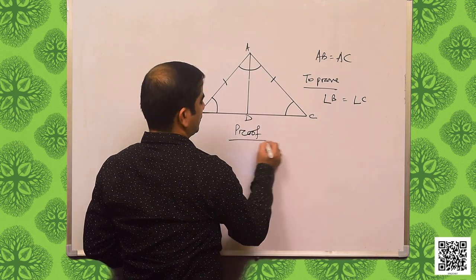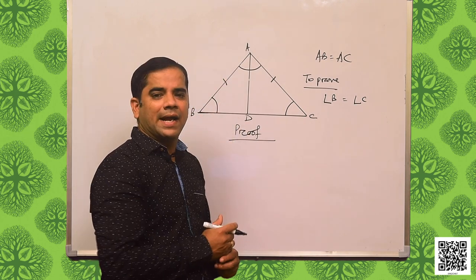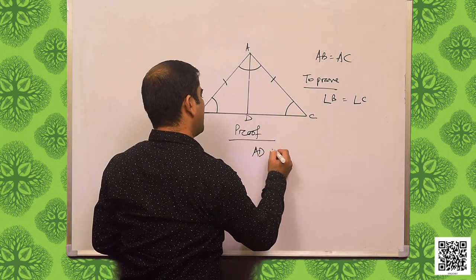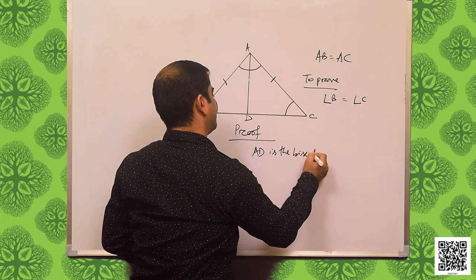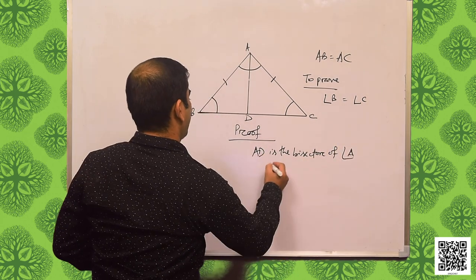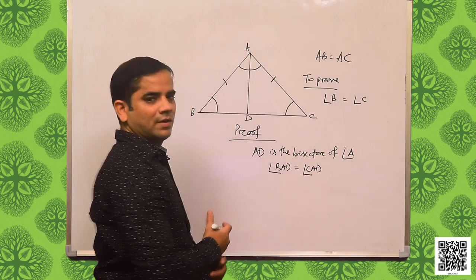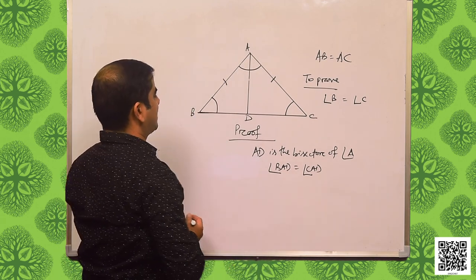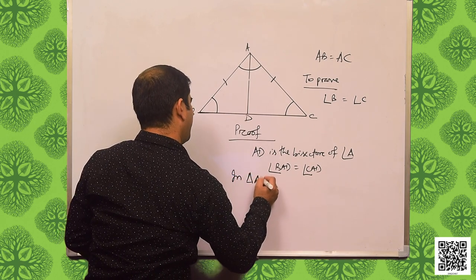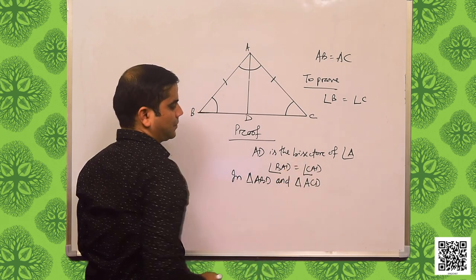Let us prove it. Let us construct a bisector of angle A that intersects BC at point D. AD is the bisector of angle A. What does it mean? It means angle BAD is equal to angle CAD. Now let us concentrate on triangles ABD and ACD.